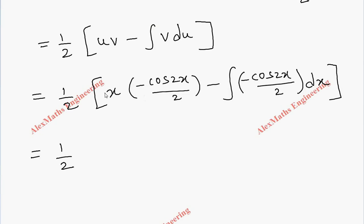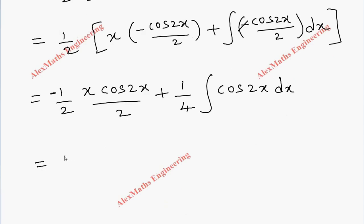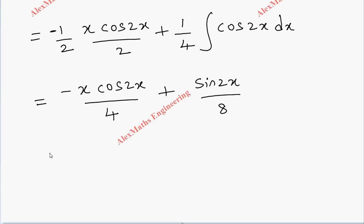Multiplying 1/2 inside: the first term gives -x cos 2x/4. The remaining integral: cancelling the two 1/2 factors gives +1/4 · ∫cos 2x dx. Integrating cos 2x gives sin 2x/2, so +sin 2x/8. Therefore q = -x cos 2x/4 + sin 2x/8.